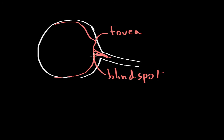This is known as the blind spot because no photoreceptors are present in this area. Rods are mainly found in the periphery of the eyeball — we'll use blue to represent rods. They're found mostly in the periphery of the eye, and there are no photoreceptors at the blind spot because that's where the optic nerve actually exits the eye.